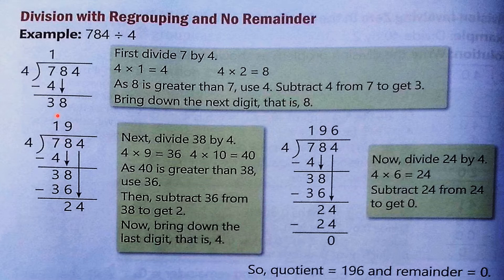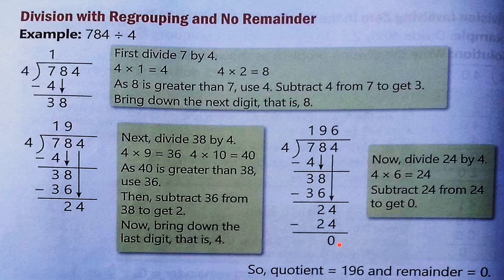In the table of 4, how many times equals 38? 38 is not there, so we take 36. Now 4×9=36, so 38 minus 36 is 2. Bring down 4. In the table of 4: 6×4=24, so 24 minus 24 is 0. The answer is 196. So this is with regrouping and no remainder — the quotient is 196.